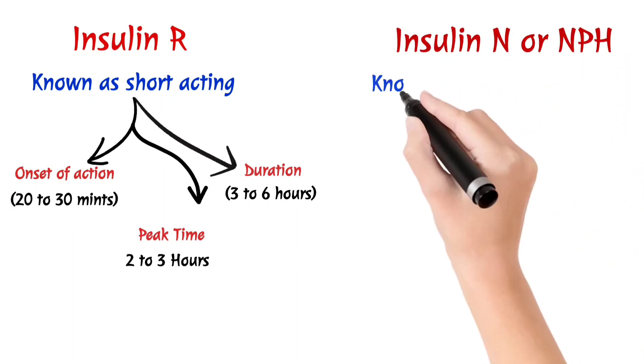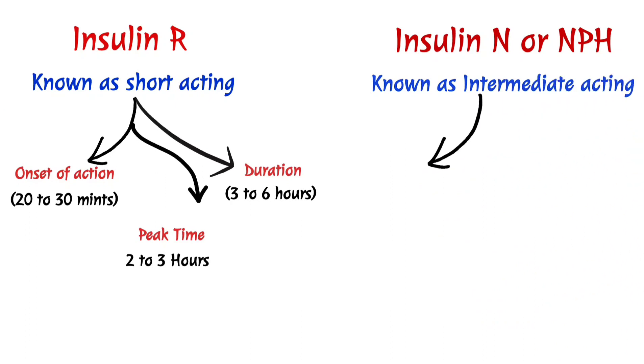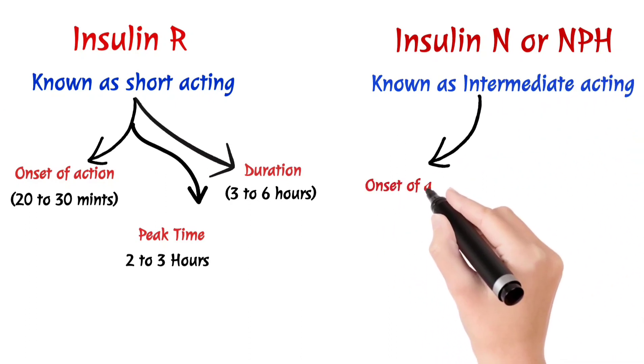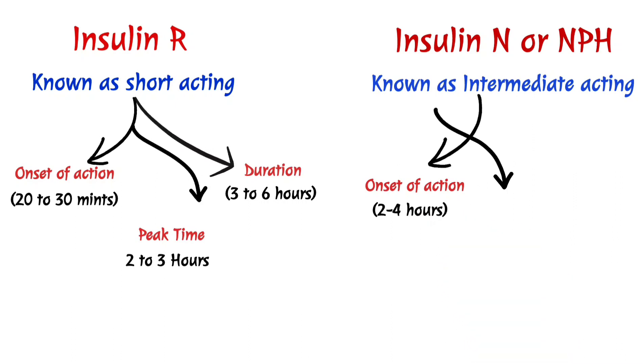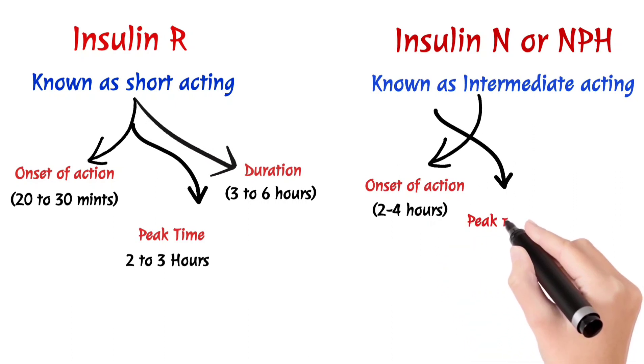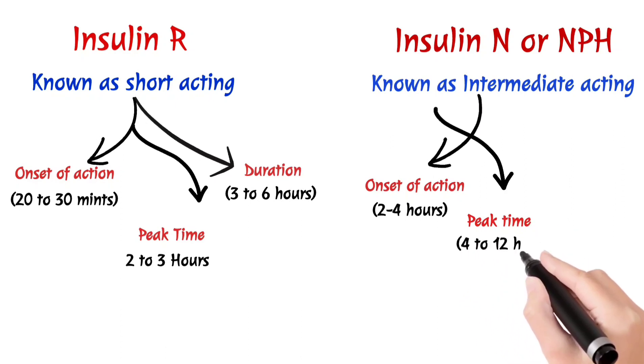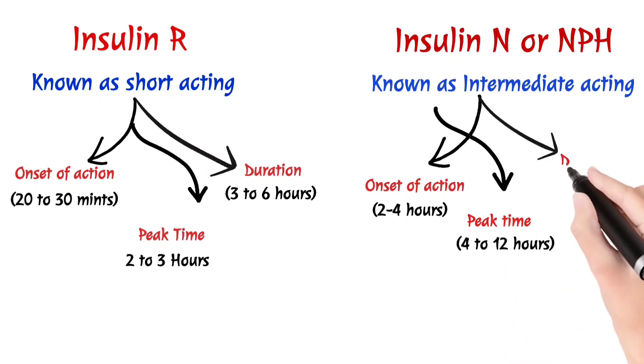Another one is Insulin N or NPH, also known as intermediate-acting. So the onset of action is about 2 to 4 hours. And when we talk about the peak time, it's about 4 to 12 hours.